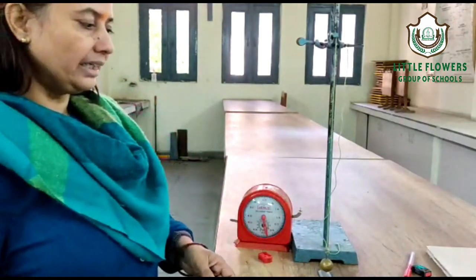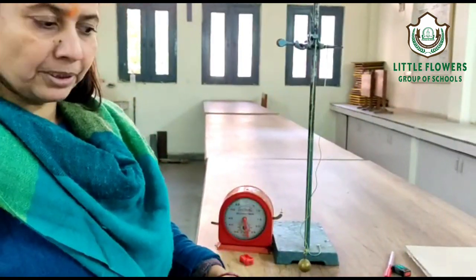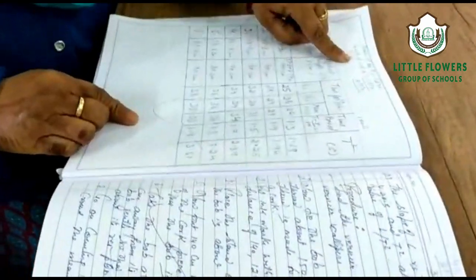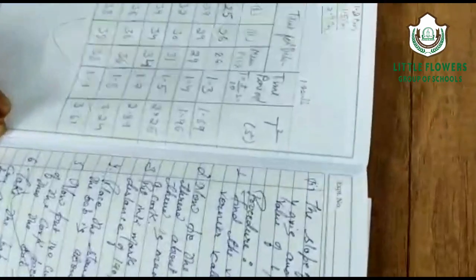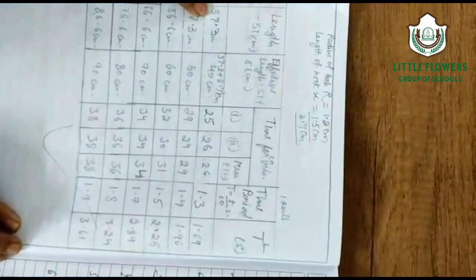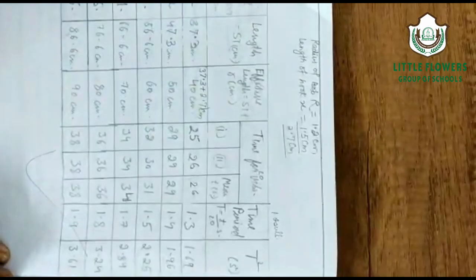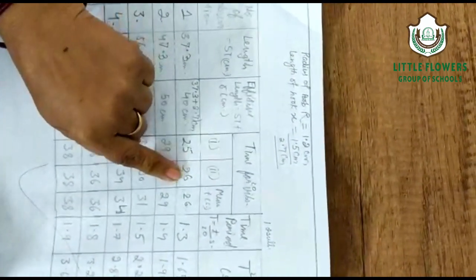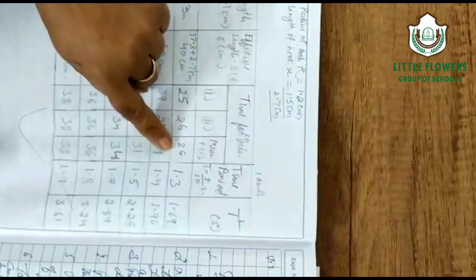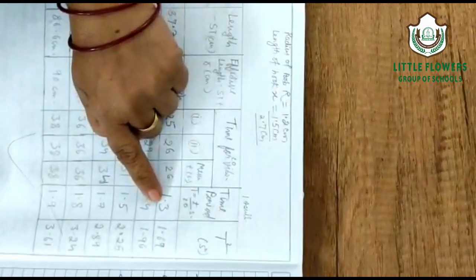Now, after taking the length as well as the time period, let us look at the observation table. The radius of the ball is 1.2 cm and the length of the hook is 1.5 cm, making a total of 2.7 cm. So the string length to make 40 cm effective length is 40 minus 2.7, which equals 37.3 cm. At 37.3 cm, for 20 oscillations, the stopwatch reads 25 seconds the first time and 26 seconds the second time, giving a mean of 26 seconds.